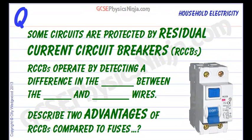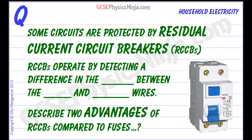Here is the flashcard on residual current circuit breakers. Some circuits are protected by residual current circuit breakers, RCCBs for short, and they operate by detecting a difference in the current between the live and neutral wires.